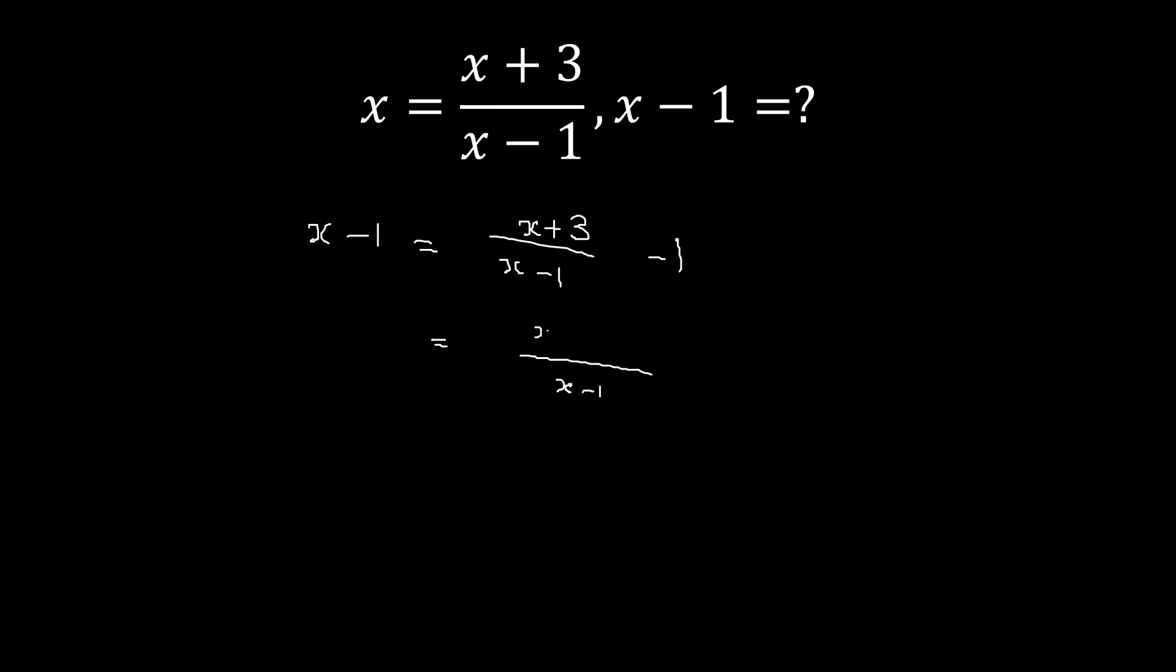When you do this simplification, we get x minus 1 and here x plus 3 minus x minus 1, which gives x plus 3 minus x plus 1 over x minus 1.